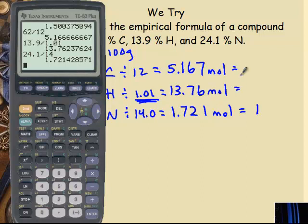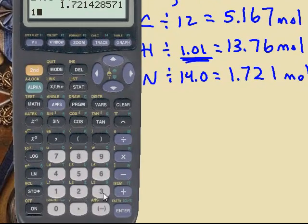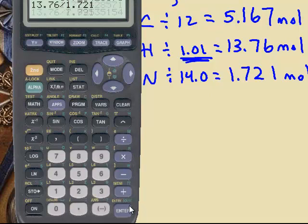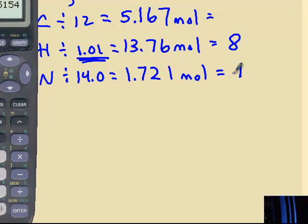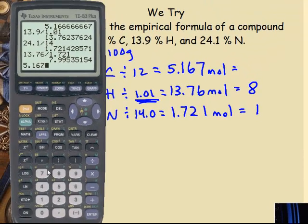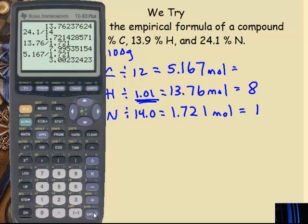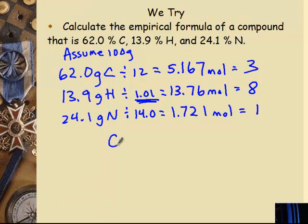I just go right to the ratio. So now I need 13.76 divided by 1.721. And you can see I get 7.995. So again, this is the step where I'm evaluating. Is it a whole number? Is it 0.5? Is it a 0.25? 5.167 divided by 1.721. And that's 3.00. So you can see this one ended up a whole number right off the bat.